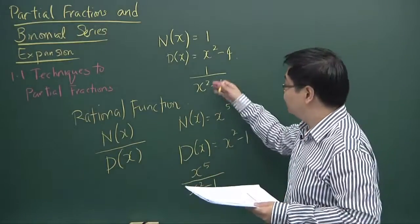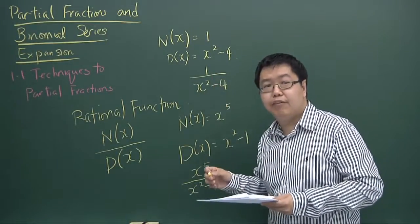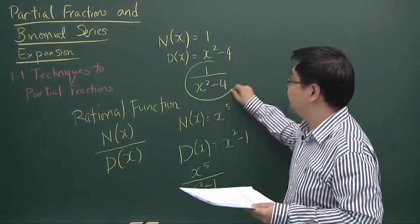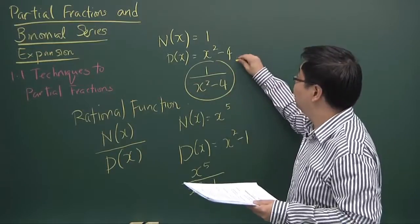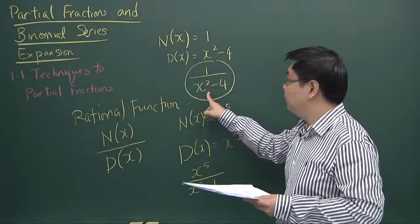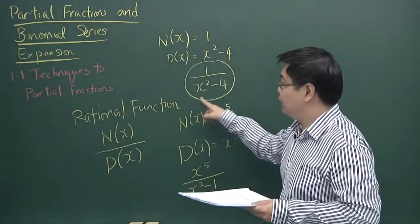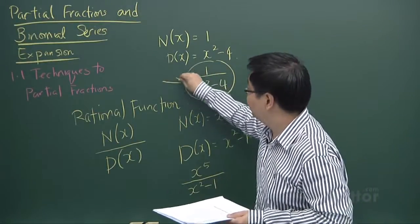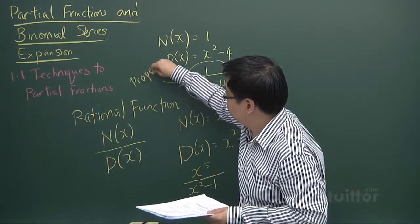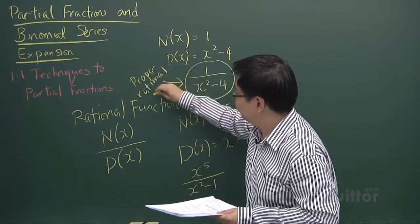Now, though these are two different rational functions, the very important point I would like to bring up is that in the first example, the degree of the numerator is smaller than the degree of the denominator. Such a rational function we call a proper rational function.